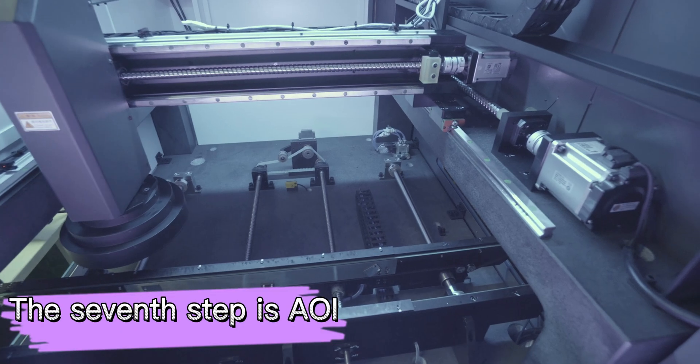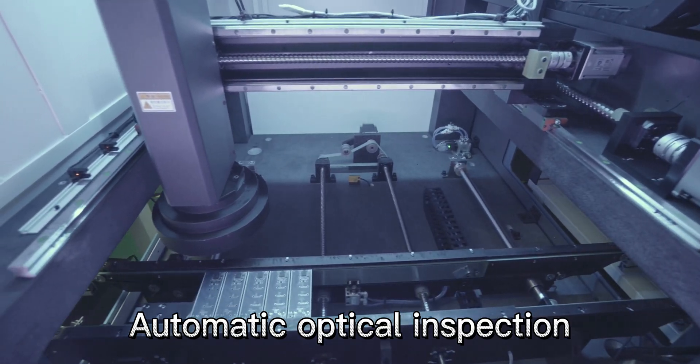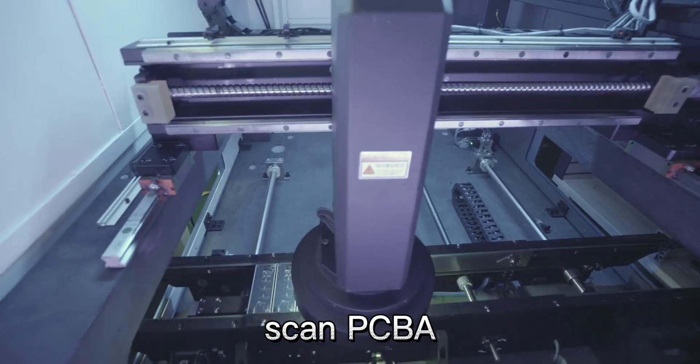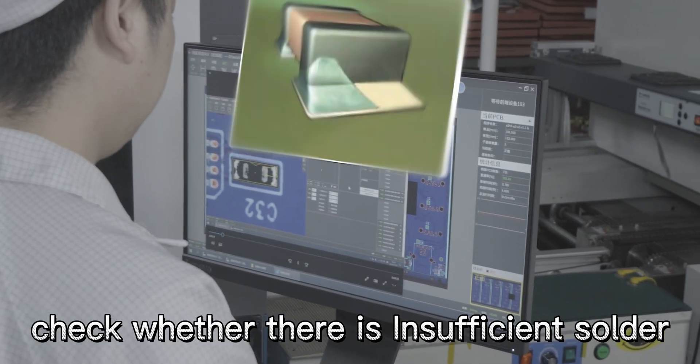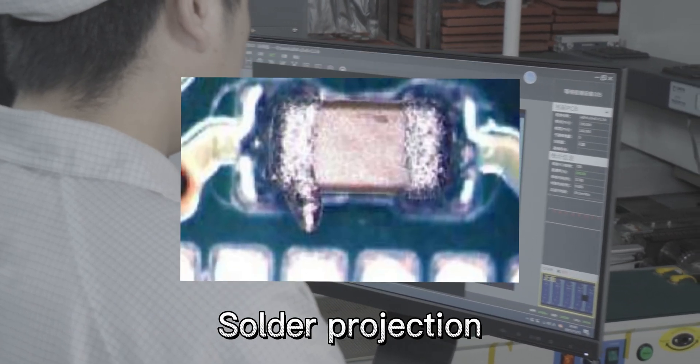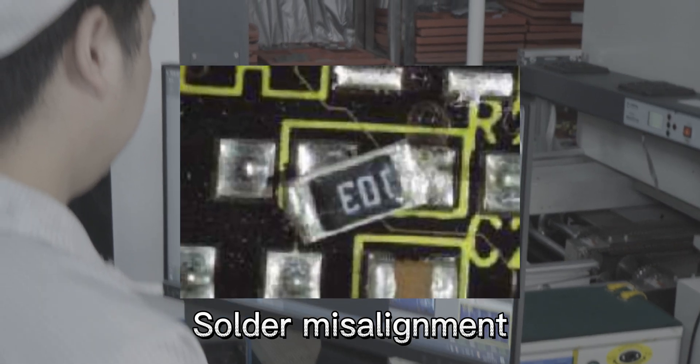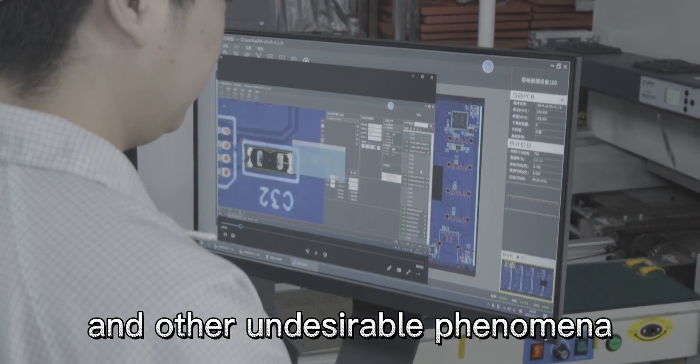The seventh step is AOI—automatic optical inspection. Scan PCB, collect images, and check whether there is insufficient solder, excessive solder, solder projection, solder misalignment, tombstone, and other undesirable phenomena.